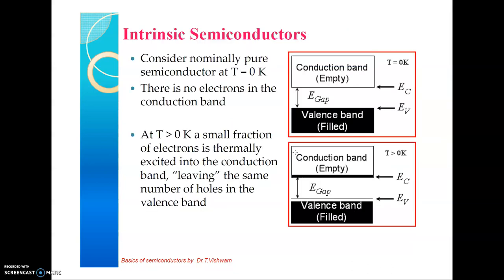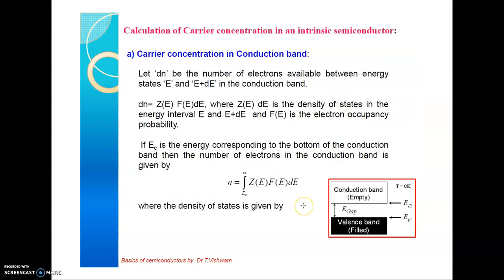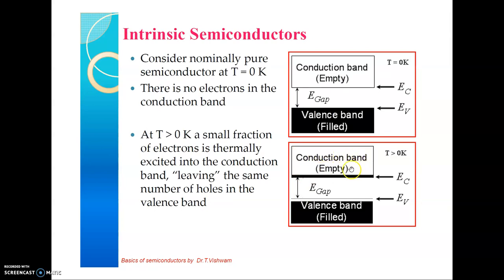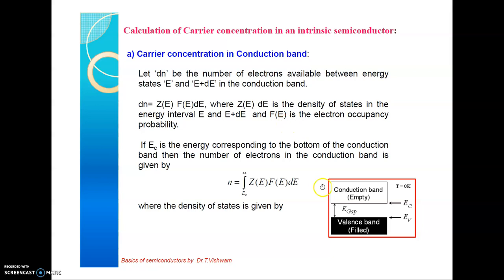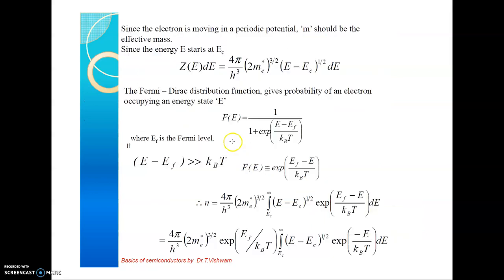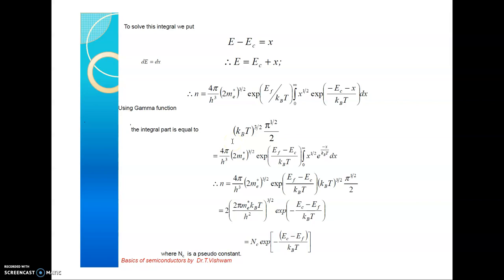Now let us look at the intrinsic semiconductor. There is a valence band and a conduction band — the maximum of the valence band and the minimum of the conduction band. At T = 0 Kelvin, no electrons are available in the conduction band. As temperature increases, bonds break and electrons can occupy the conduction band while holes are created in the valence band. We can calculate how many electrons are available in the conduction band using density of states and statistical approaches.